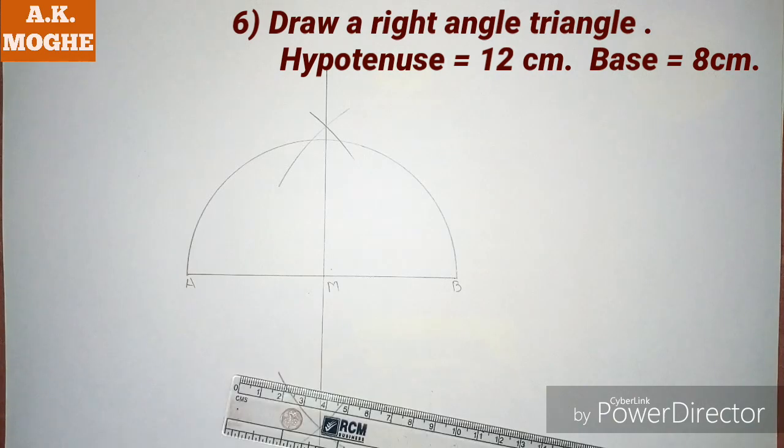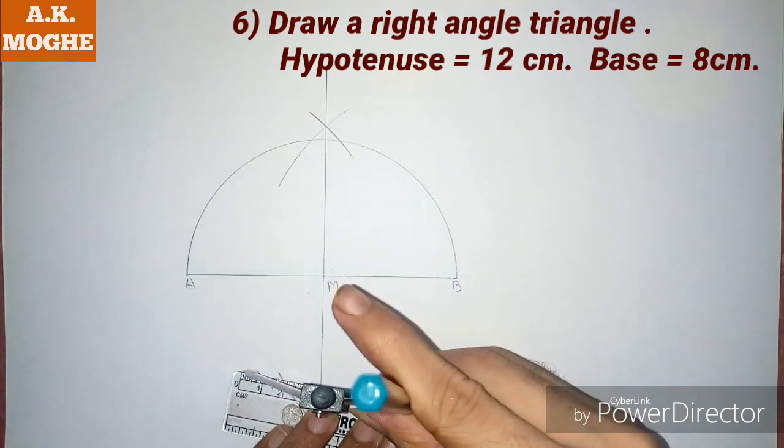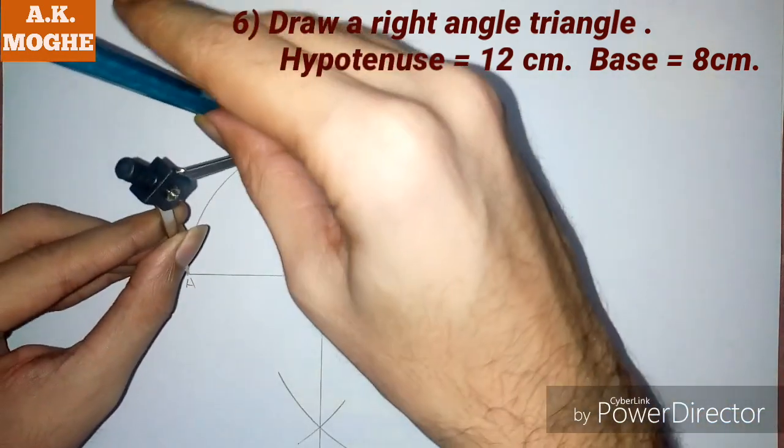And take a distance of 8 centimeters in a compass and mark that point on the semicircle from point A.